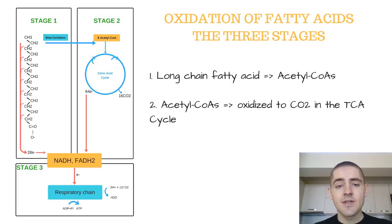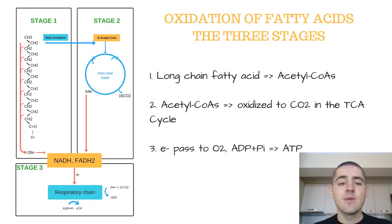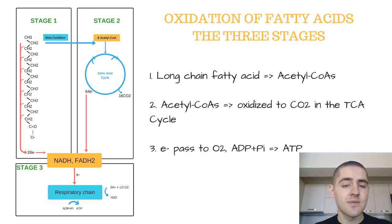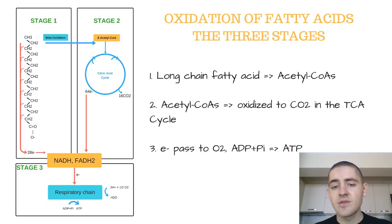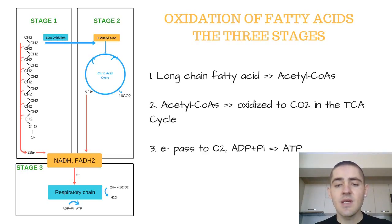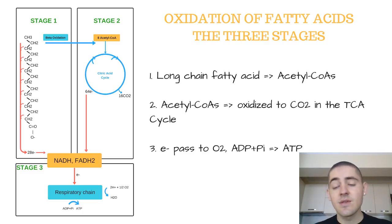NADH and FADH2 are reduced electron carriers that result from these first two stages of oxidation. In the third stage, they will donate electrons to the protein complexes of the electron transport chain, or respiratory chain. Electrons will pass through these complexes to oxygen, and ADP will be phosphorylated to ATP at the same time. This is how the energy from the oxidation of fatty acids is transferred to ATP.